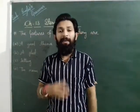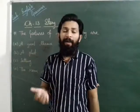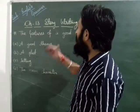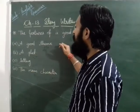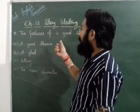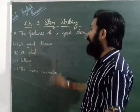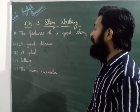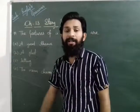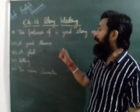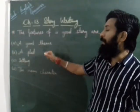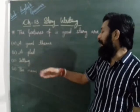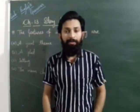Dear students, I hope you have understood this chapter. If you have any problem, you can ask me through the Google Meet class. This was about story writing — how to write a story. I think it may be very useful to you whenever you are writing a simple story or any type of writing. You have to remember four points for writing any type of story: good theme, plot, setting, and main characters. Thank you, students.